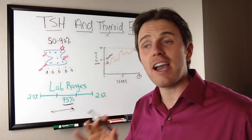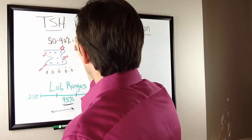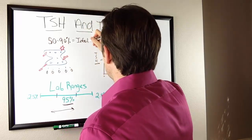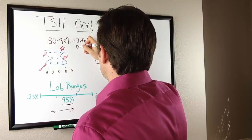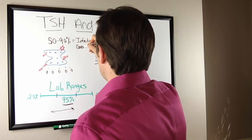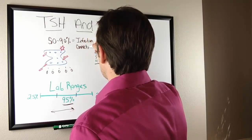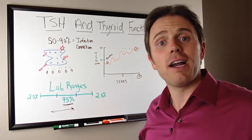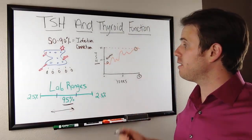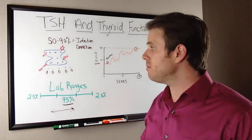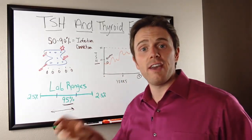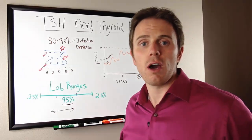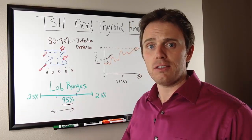We know the literature is ripe with a strong infection connection when it comes to autoimmune conditions. This could be conditions like Lyme disease, Yersinia enterocolitica — a parasite infection — or things like H. pylori or Epstein-Barr. These can confuse the immune system and cause it to start attacking the wrong tissue. We really want to figure out what's driving your autoimmune condition — whether it's TSH elevating on its own or an autoimmune condition driven by an underlying infection.